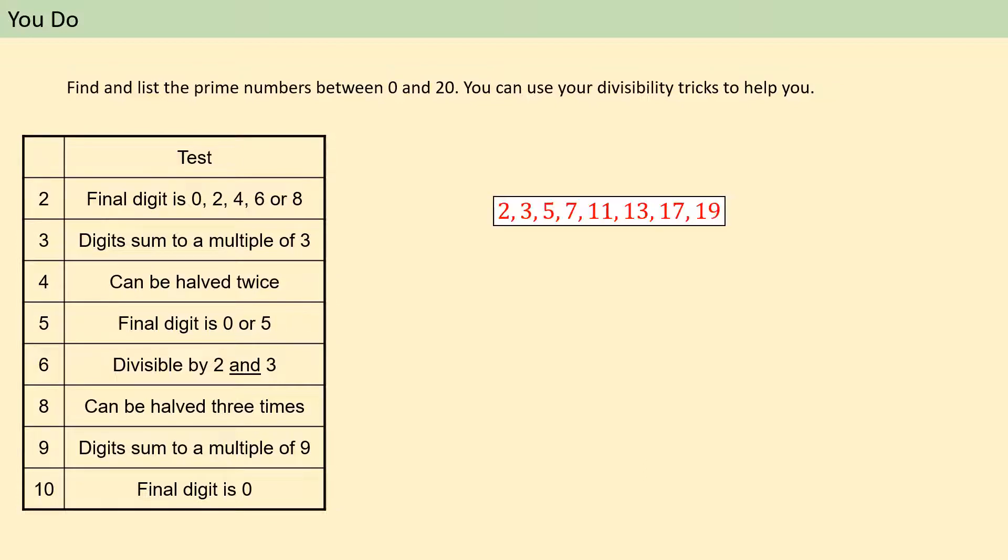So I'm going to put them up now. We've got 2, 3, 5, 7, 11, 13, 17 and 19. Any other odd numbers that you've accidentally put in there, just be really careful. The others are not prime. They have at least one other factor.